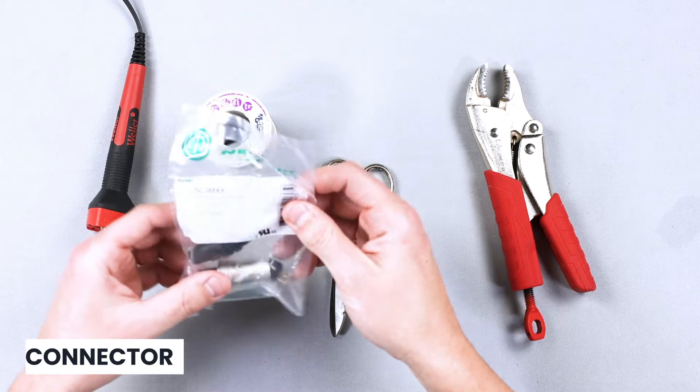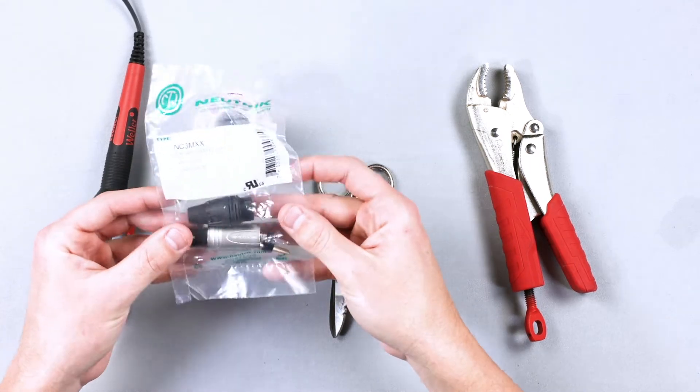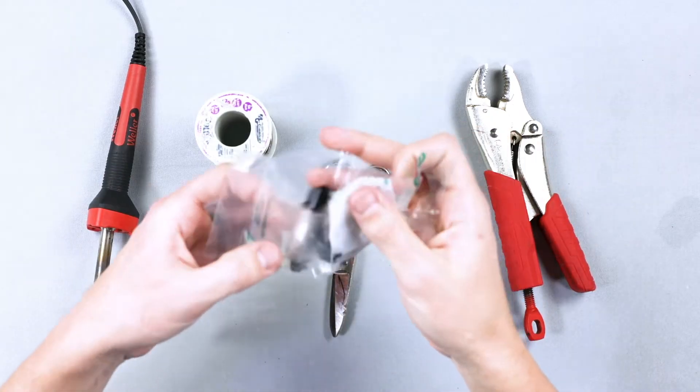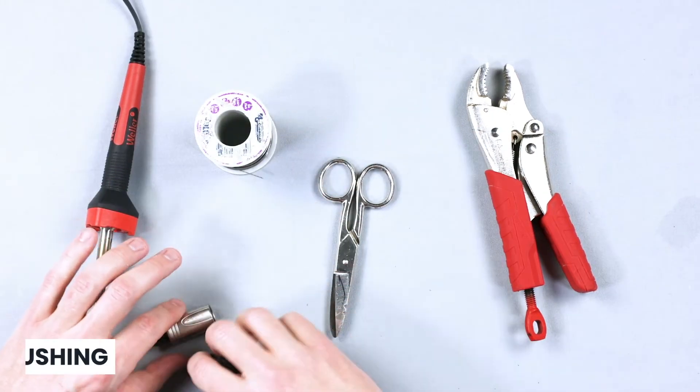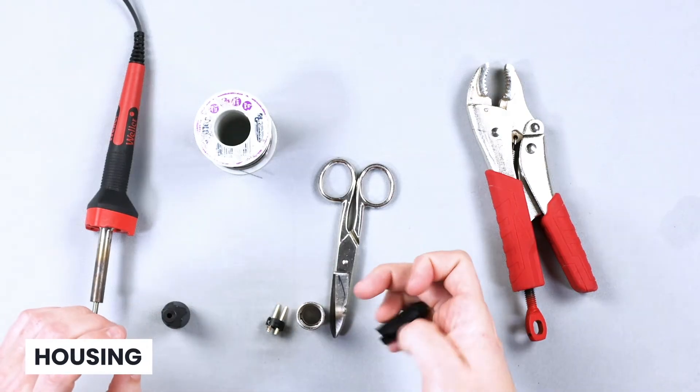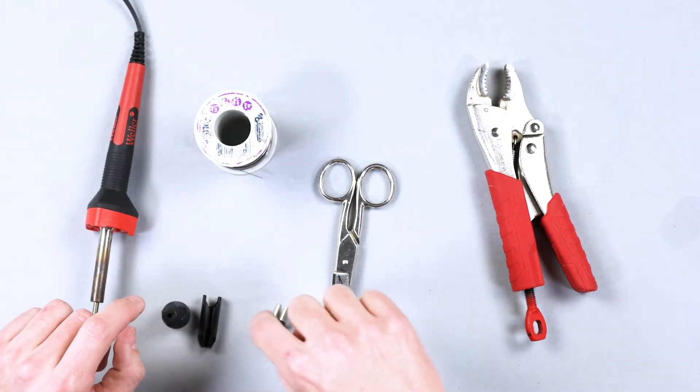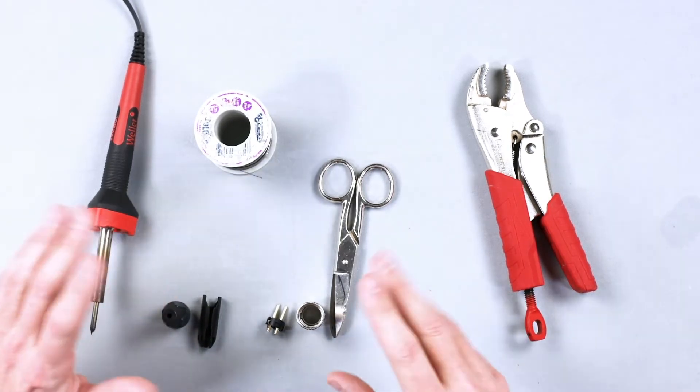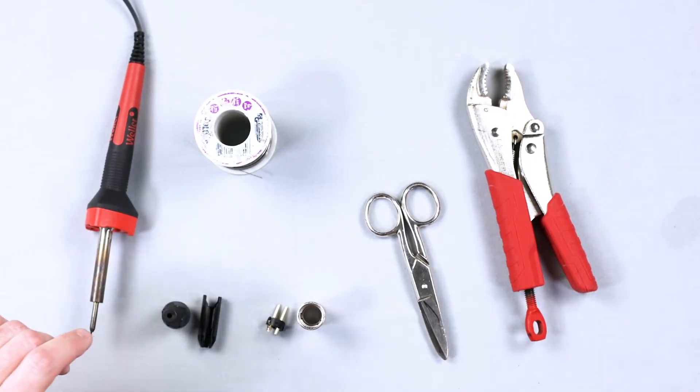The connectors all come in a bag like this. This is a male. What you're going to need out of the connector is, out of the bag, it comes in four parts. You have a bushing, this is an insert, a housing, chuck. Bushing, chuck, insert, housing. Honestly, I didn't know that until about 10 minutes ago. I've done it for so long, it's like second nature at this point.